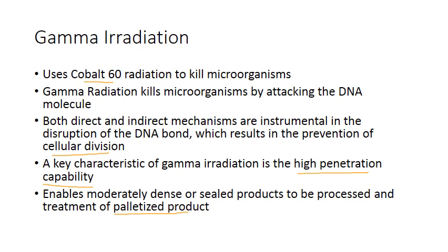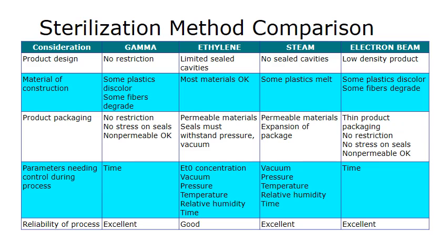But as with electron beam, gamma does have the capability to change polymers and result in conformational changes of the polymers. So ethylene oxide is still the preferred sterilization method for polymers.